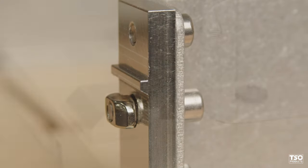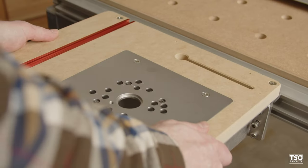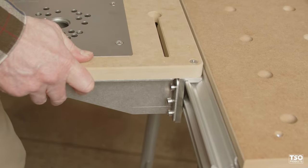CNC machine brackets lock the router table onto any side of your MFT3 for a completely flushed fit, allowing you to customize your workflow for maximum efficiency.